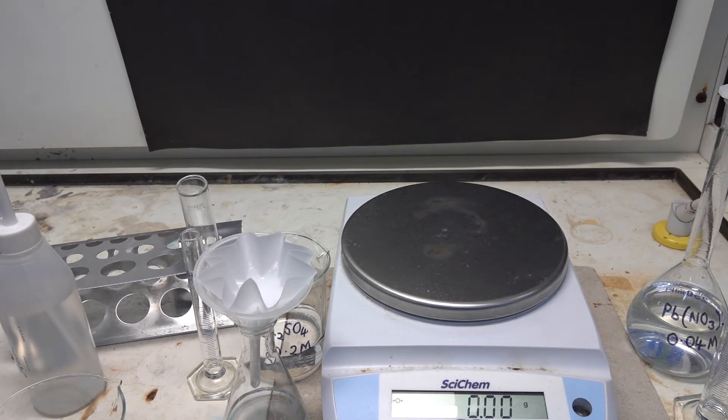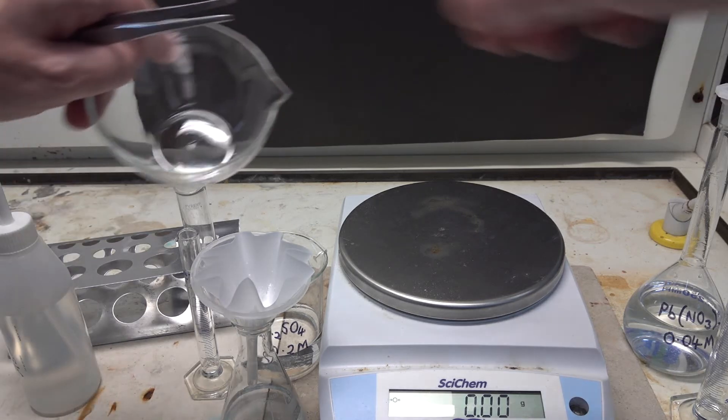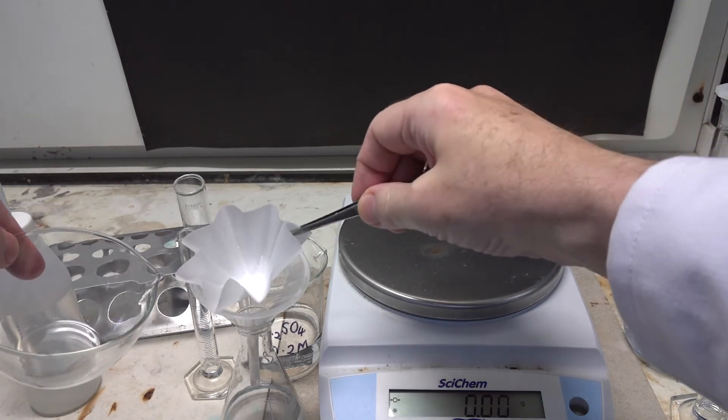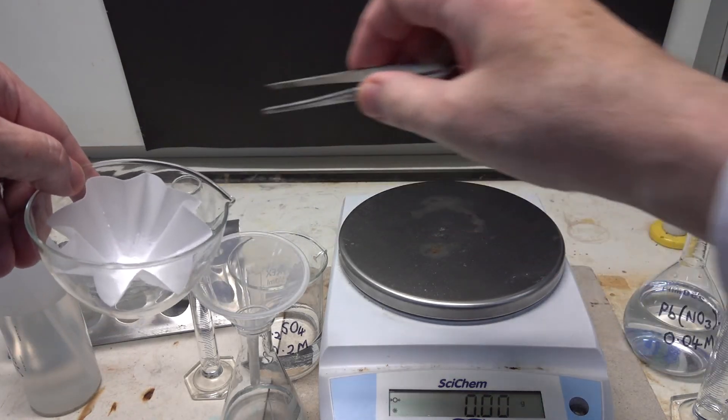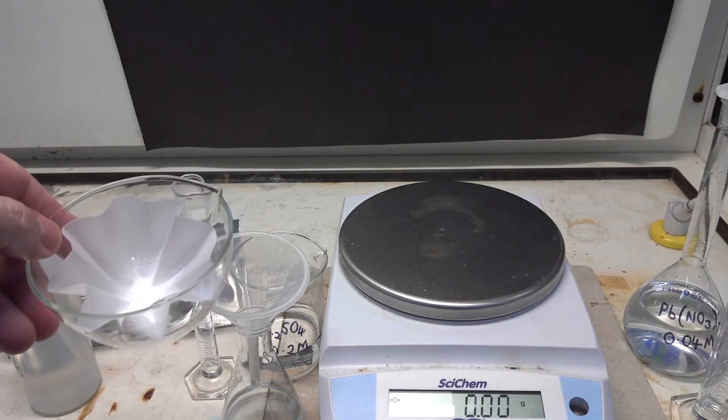Once more we'll pause the video whilst that filters through. Now that the precipitate has finished filtering, the last thing we need to do is to transfer the filter paper to the evaporating basin and then place that in a drying cabinet to dry and remove all the water.